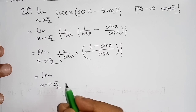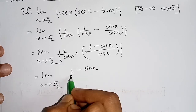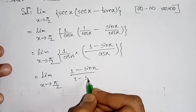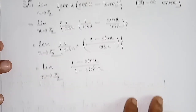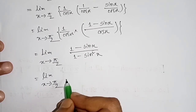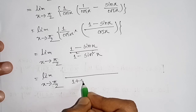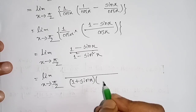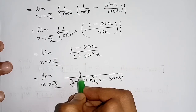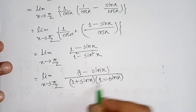We multiply numerator and denominator by (1 minus sinx). The denominator cos²x equals 1 minus sin²x, which factors as (1 plus sinx)(1 minus sinx) by the difference-of-squares formula. The (1 minus sinx) terms cancel, leaving 1/(1 plus sinx).